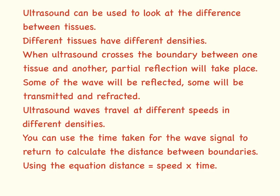Ultrasound can be used to look at the differences between tissues. Different tissues have different densities. When ultrasound crosses the boundary between one tissue and another, partial reflection will take place. Some of the waves will be reflected and some will be transmitted and refracted.